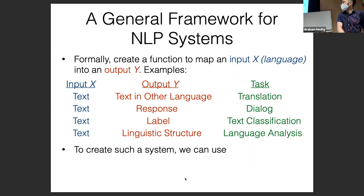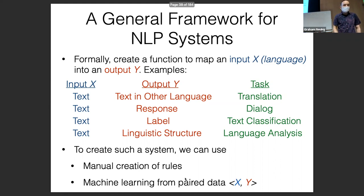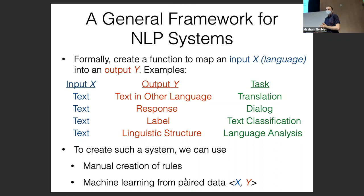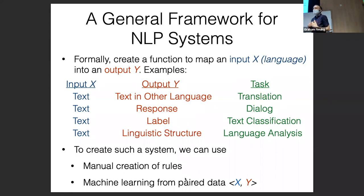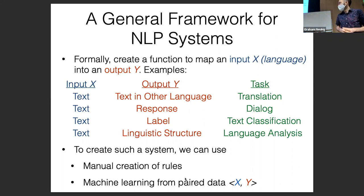To create such a system, we can use manual creation of rules, or data-driven methods that learn from paired data using machine learning. Most of this class is going to be talking about the latter. But if you actually want to build a system that works, you shouldn't be discounting rule-based approaches — you shouldn't go to a machine learning system before you're pretty sure that a rule-based system is not going to work for the task you're interested in.